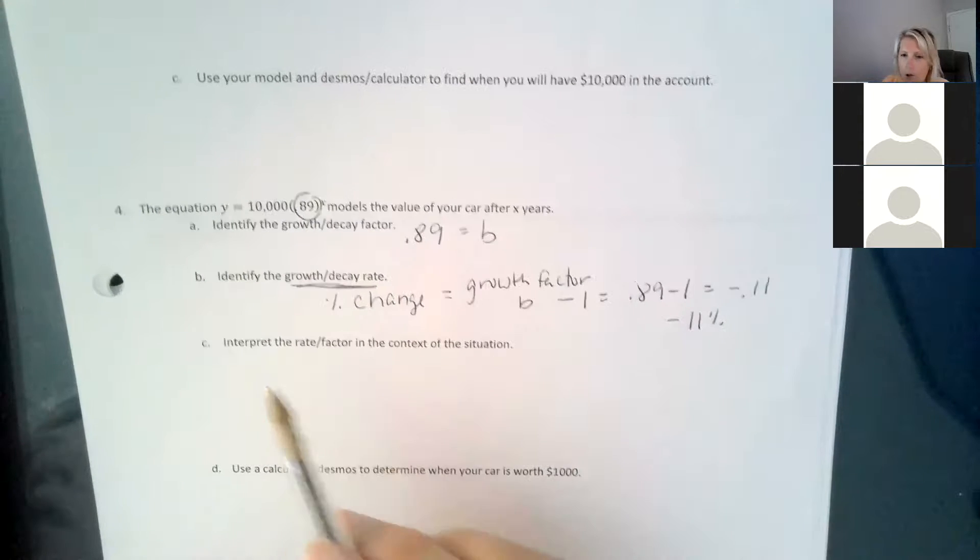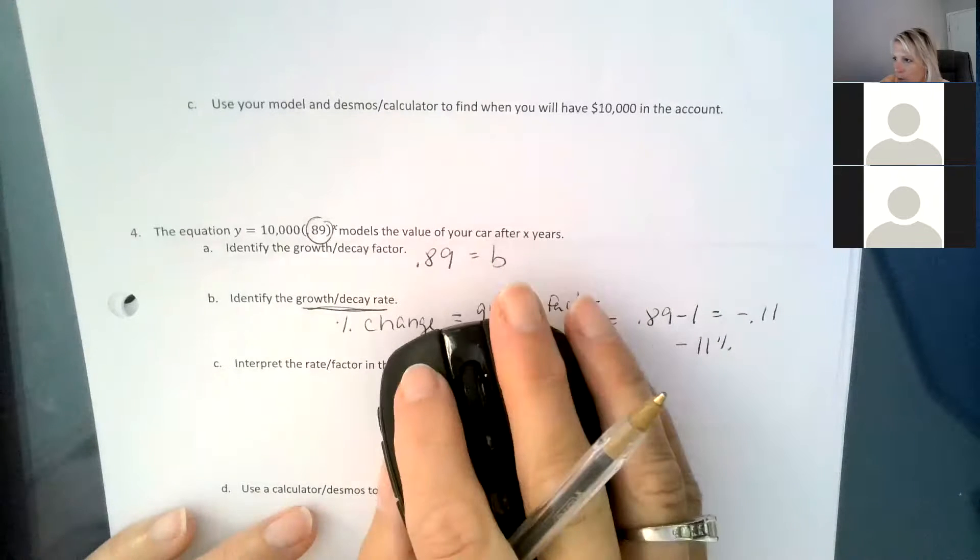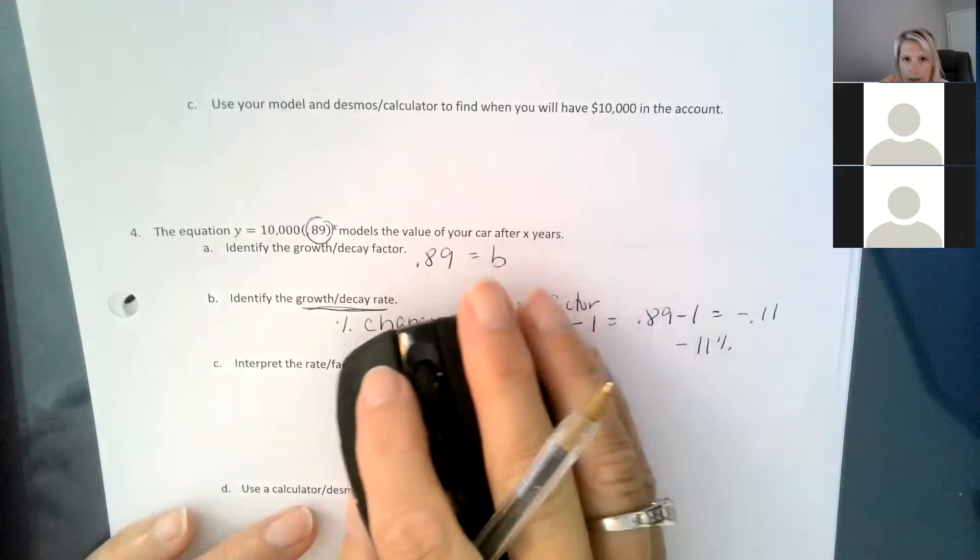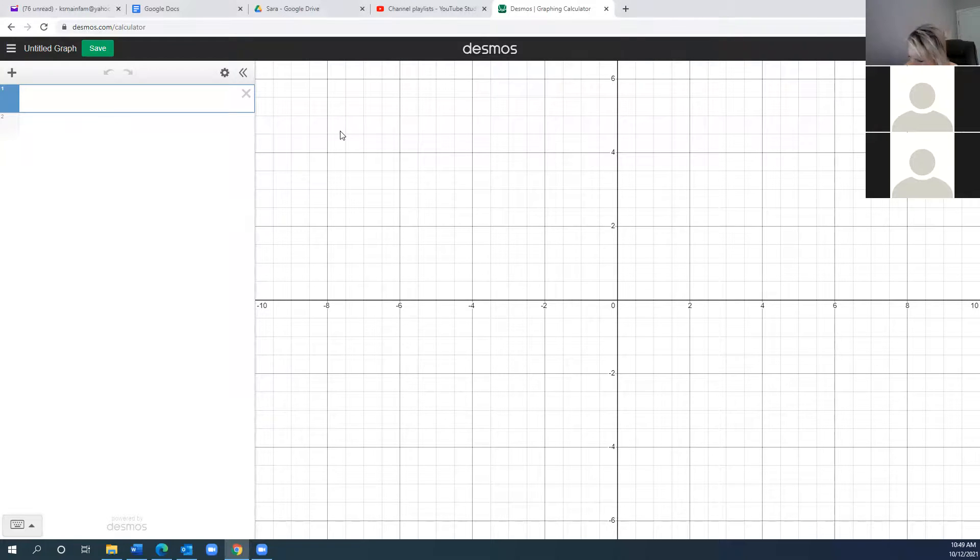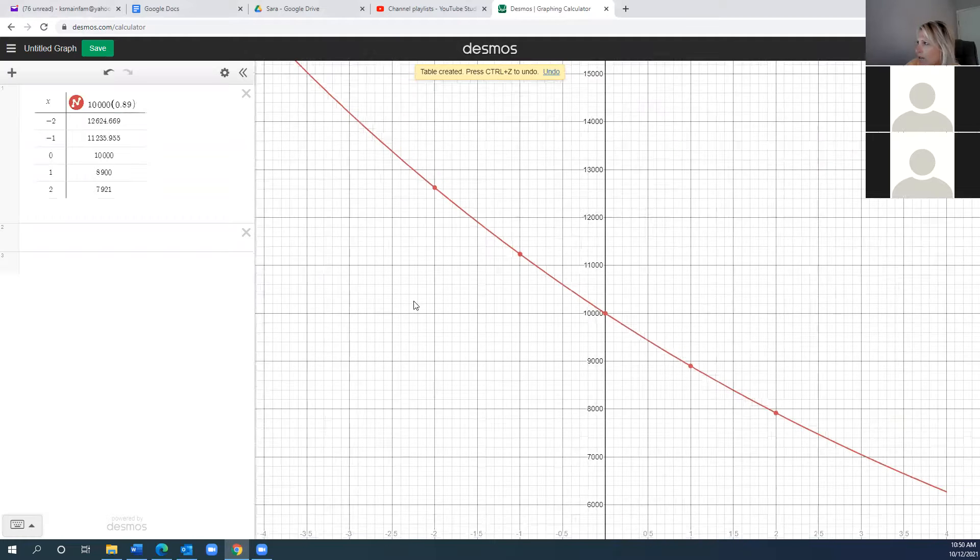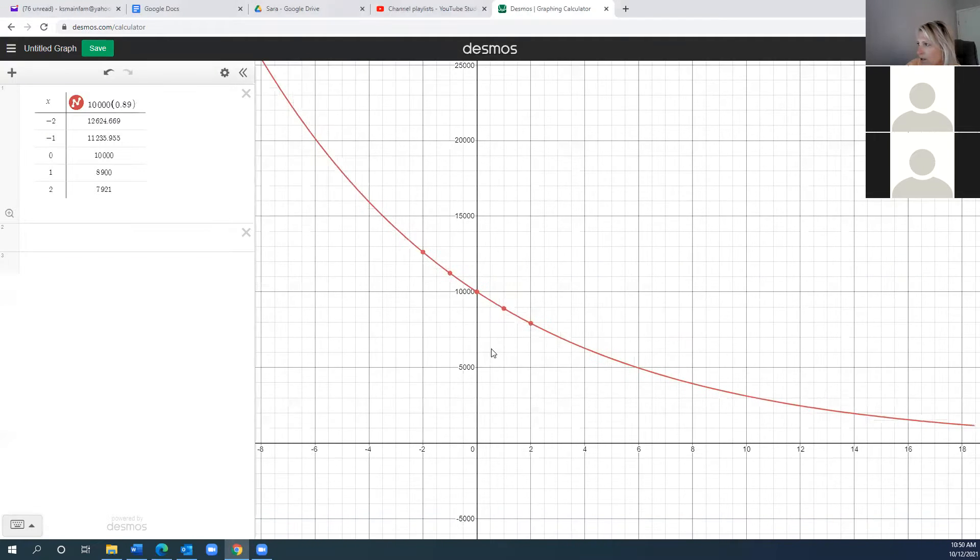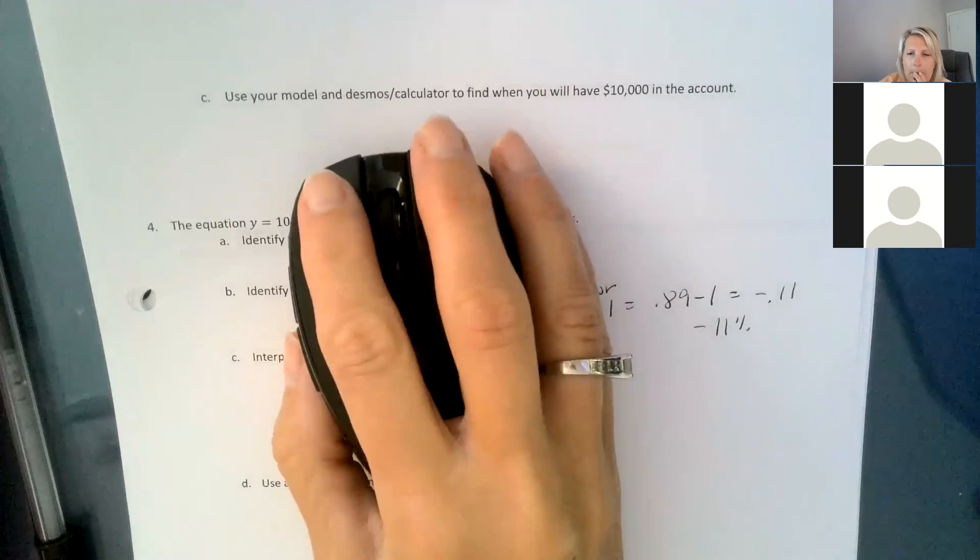And then I want you to interpret. So remember on the interpret, I'm always looking for who, what, and where and all that with regard to this model of the value of your car after X years. Also don't forget that one strategy could be to go to Desmos and type in your equation to verify that that makes sense. You could type in Y equals 10,000 times 0.89 to the x, and then you can do the gear to make a table and then hit the magnifying glass. And sure enough, it does look like it's decreasing. So that would kind of verify for you, validate, that would make sense.